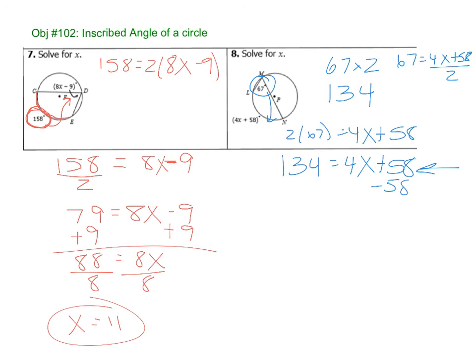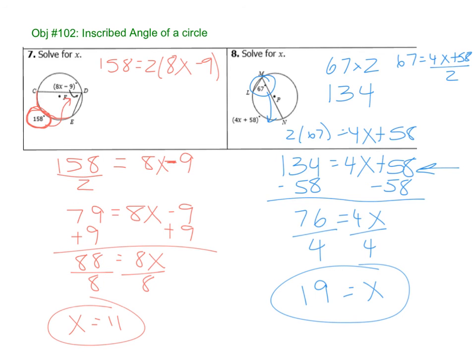Subtract 58 on both sides. 4x equals, let's see, that's 14, 6, 76, divide by 4, x equals 19. And that's it. That's the last one.